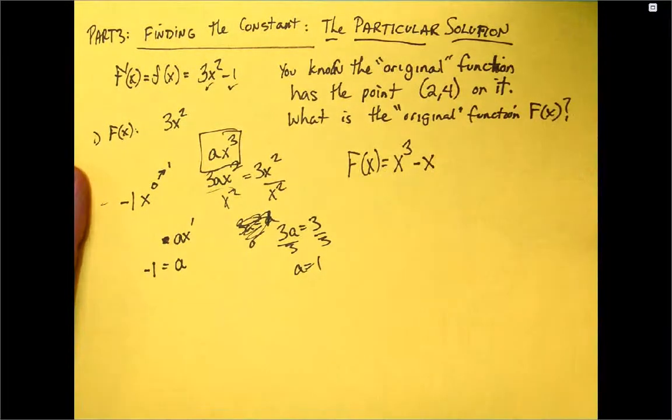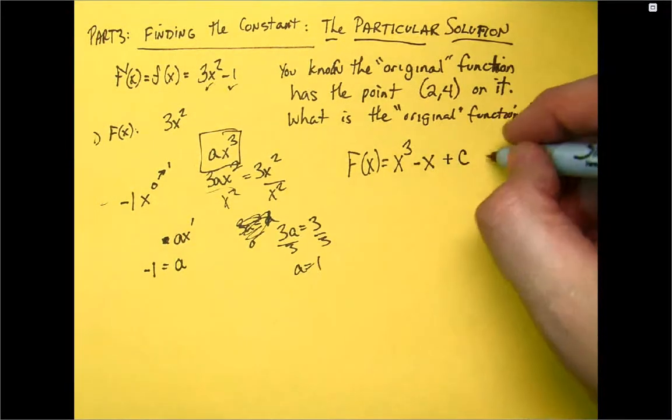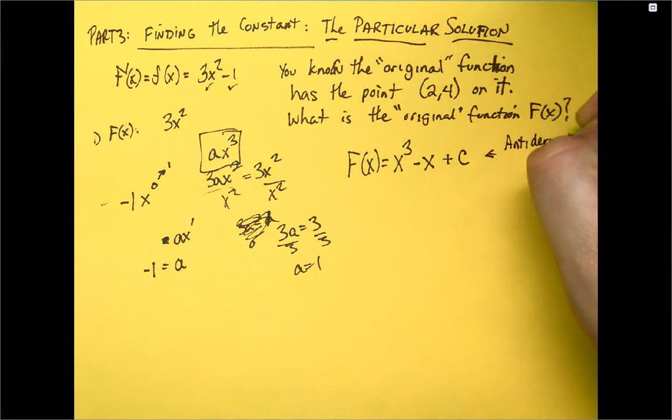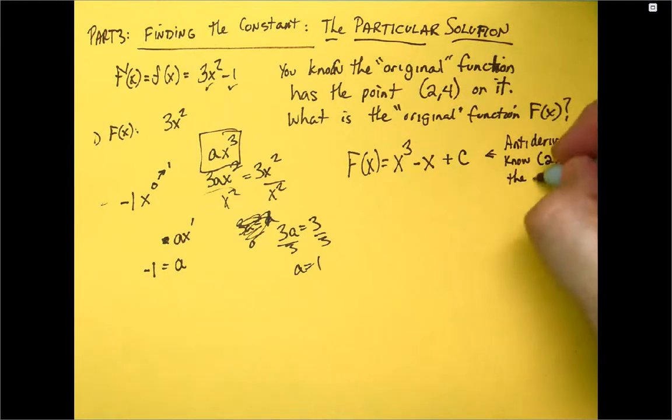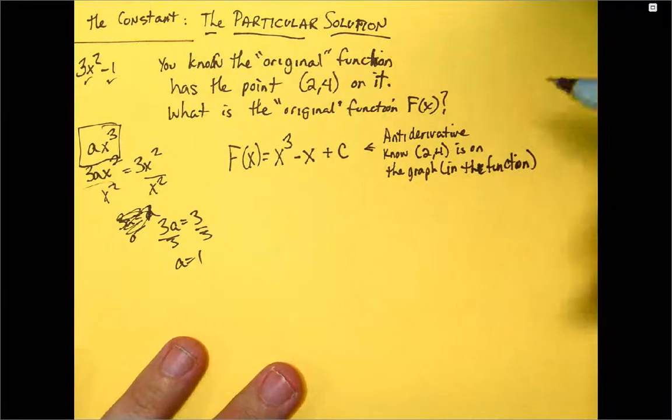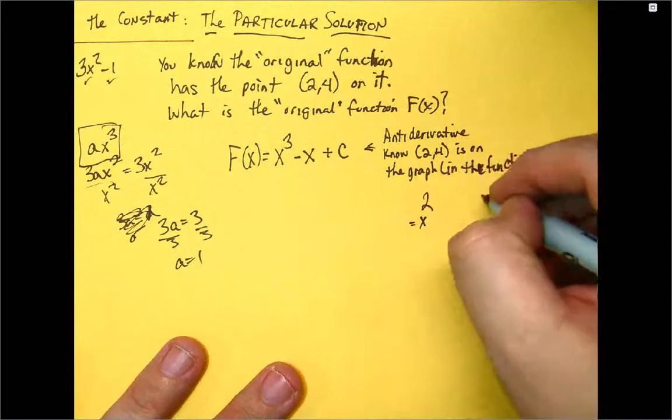Now, since I don't know the constant, it's always plus c. Plus c is always there. But here's what I do know. This is going to be my antiderivative. But now I know 2, 4 is on the graph in the function. Now, 4, that's equal to x. 4 is equal to f of 2.